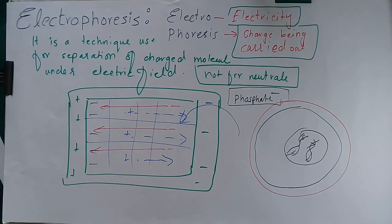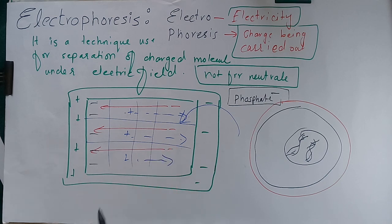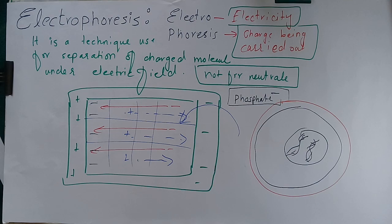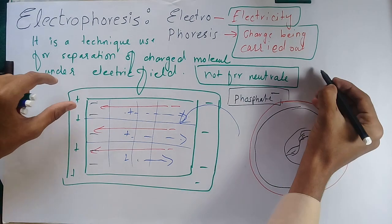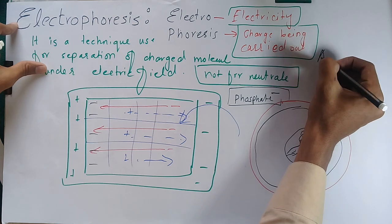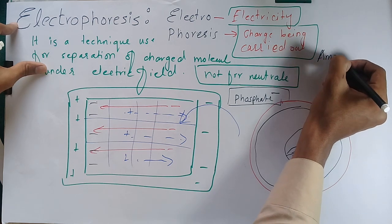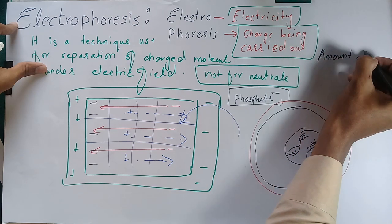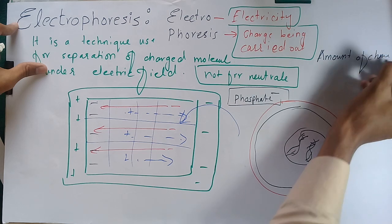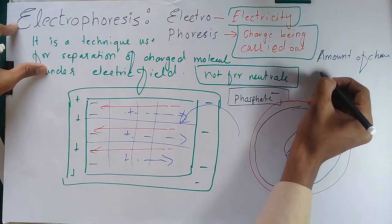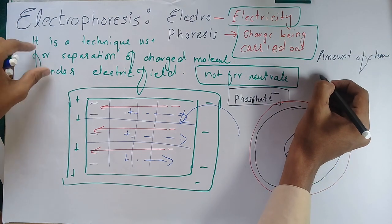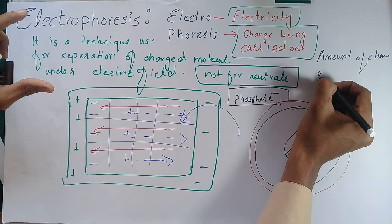These are the main basics of electrophoresis. When using electrophoresis, we must remember two things: first is the amount of charge, and second is the size of molecules.